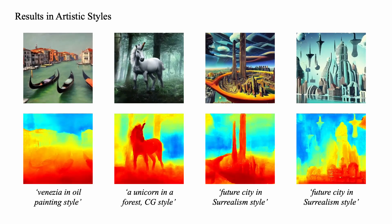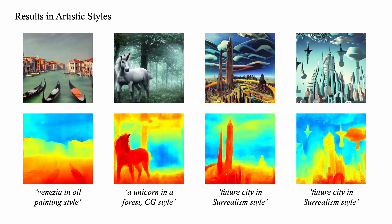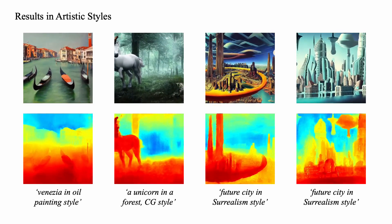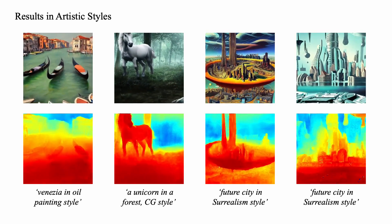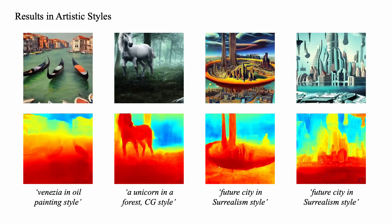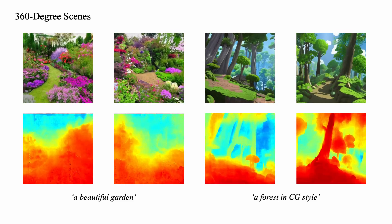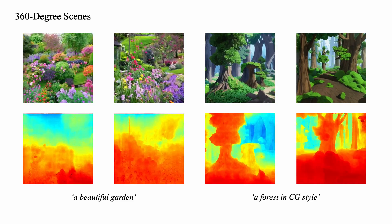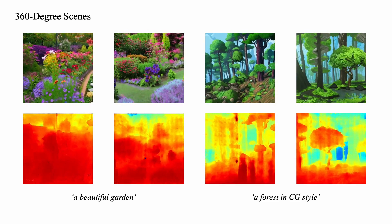Additionally, our Text2NeRF can also generate 3D scenes in artistic styles, such as Venezia in oil painting style, a unicorn in a forest in CG style, and a future city in surrealism style. Furthermore, our method is not limited by the view range and can generate 360-degree scenes, thanks to our progressive scene inpainting and updating strategy.